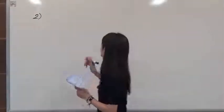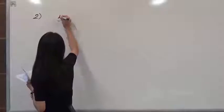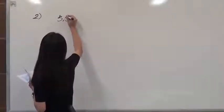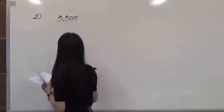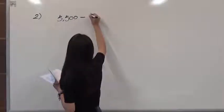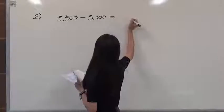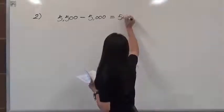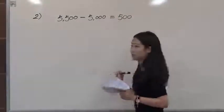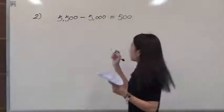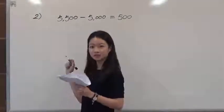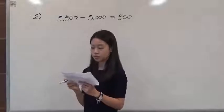So as we all know, we have 5,500 in spring semester minus 5,000 in fall semester. We could find a difference of 500, the increase amount between these two different semesters.